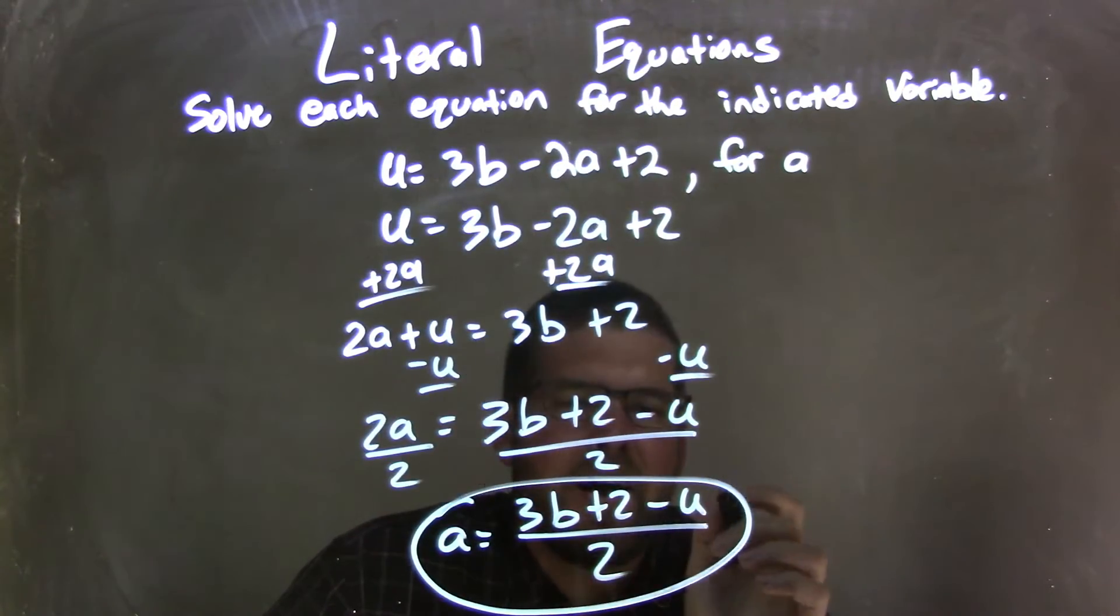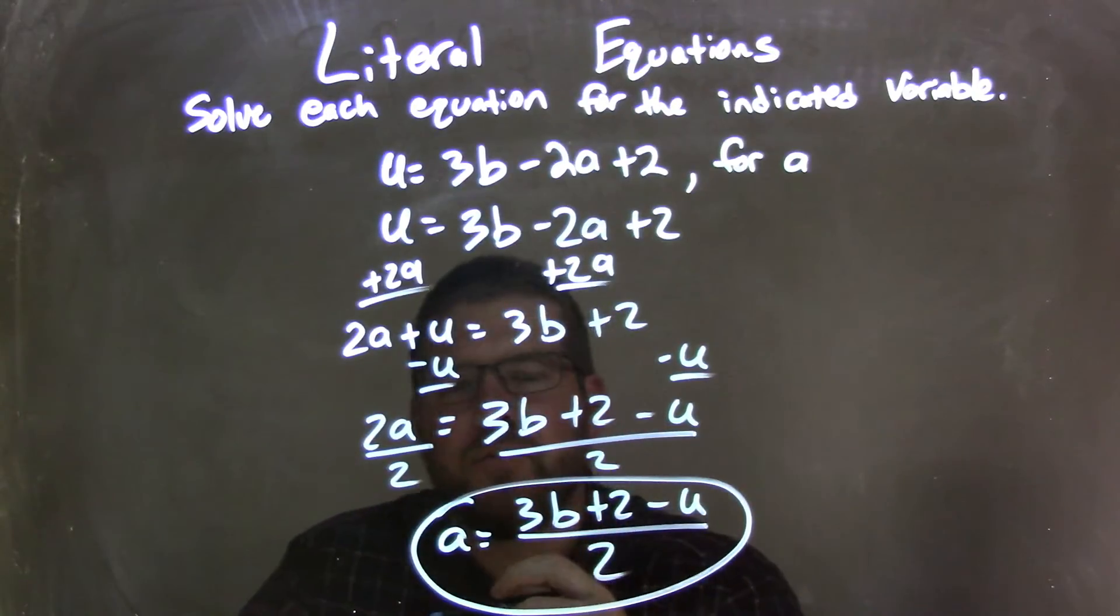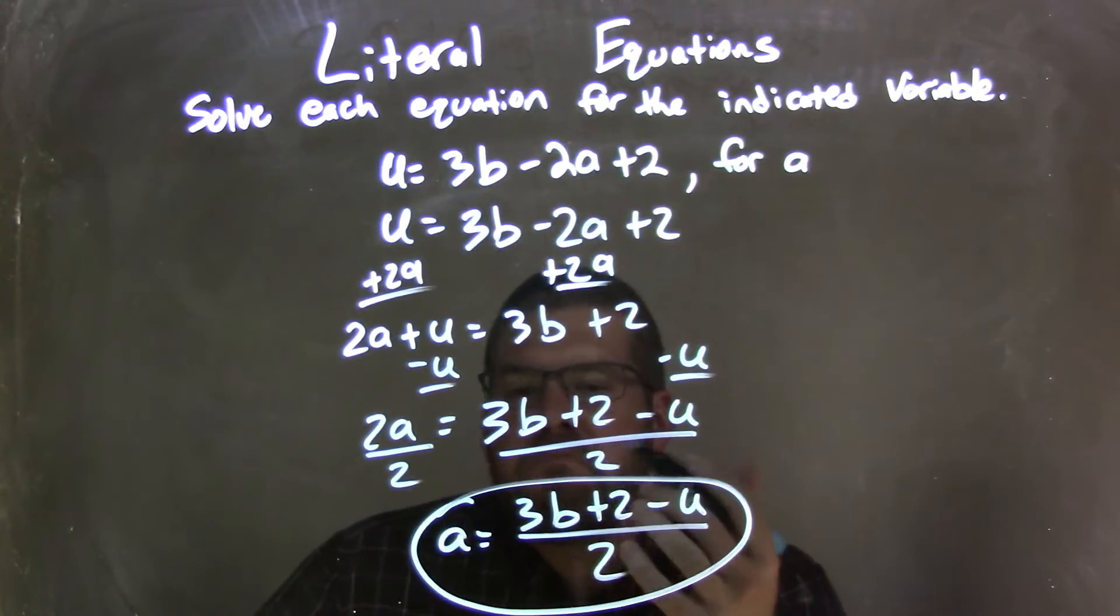Okay? I guess you can put your variables together, but it's all good for this problem here. And so I'm good with a equals 3b plus 2 minus u over 2. Hopefully your teacher is as well.